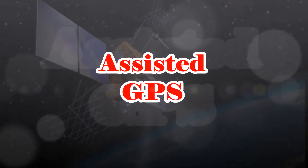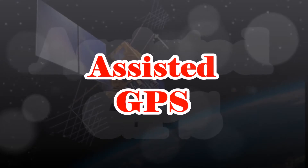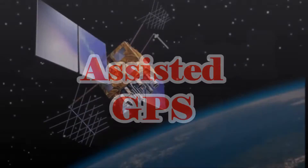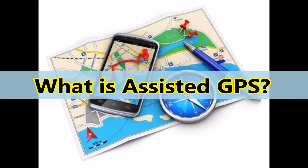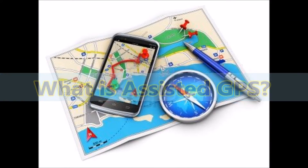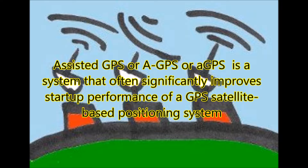Assisted GPS. What is Assisted GPS? Assisted GPS, or AGPS, is a system that often significantly improves startup performance of a GPS satellite-based positioning system.